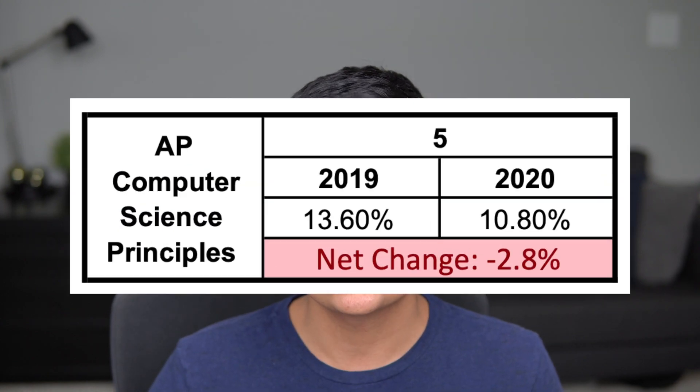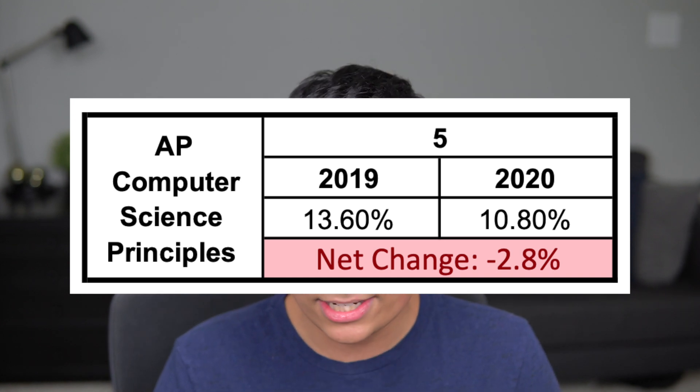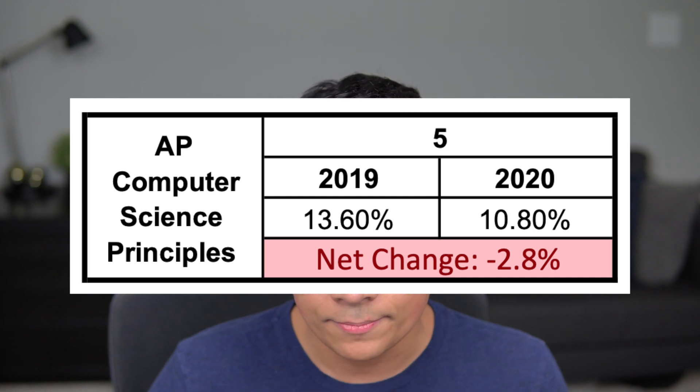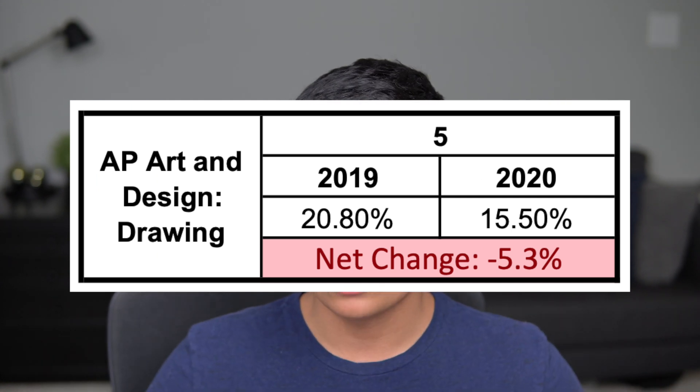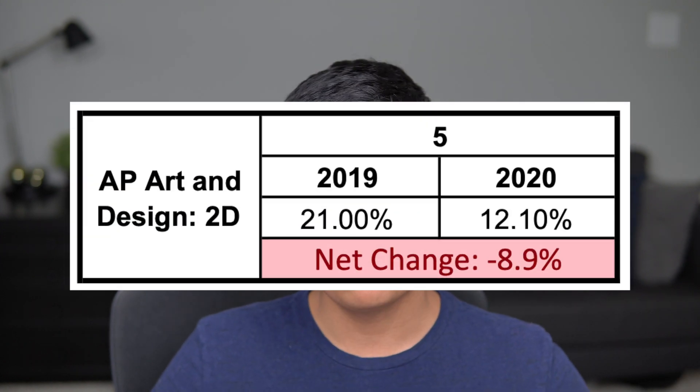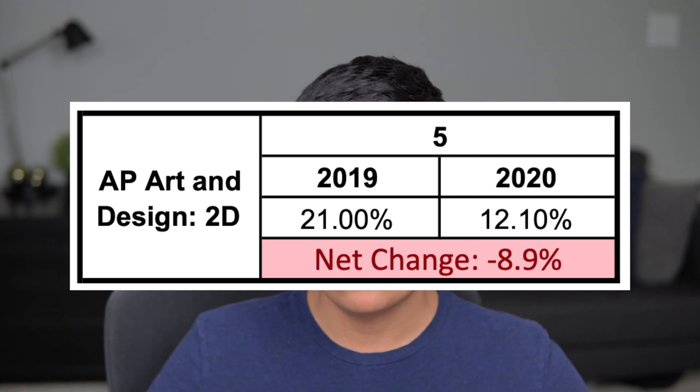Some of the classes with the most significant drops in five rate: AP Computer Science Principles dropped by 2.8%, AP Art and Design Drawing decreased by 5.3%, and 2D Art and Design had one of the biggest drops at 8.9%. A lot of this is due to changes in the exam format — for example, Computer Science Principles was only a portfolio with no multiple choice section, which usually makes up almost 60% of the overall score. So the changed exam structures caused scores to fluctuate.